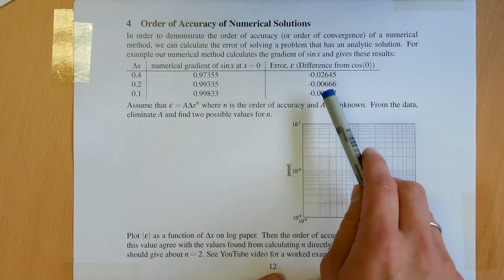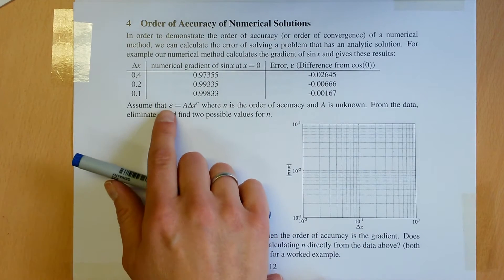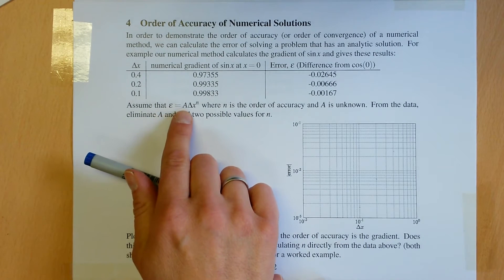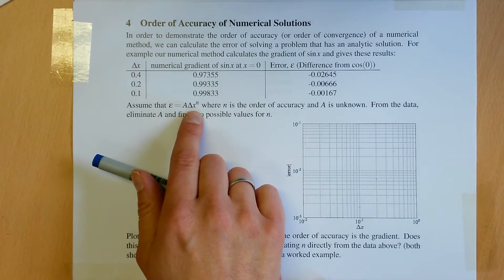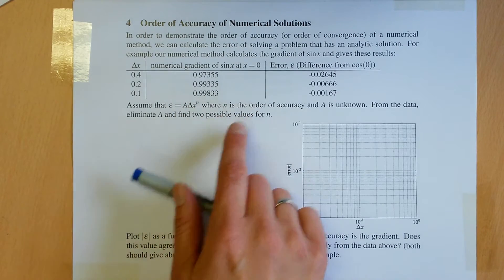Given these errors, we know that the error is proportional to a constant multiplied by delta x to the power n, where n is the order of accuracy.